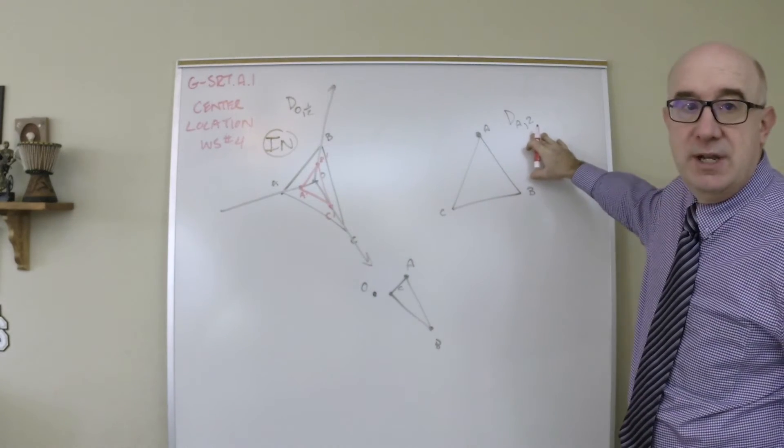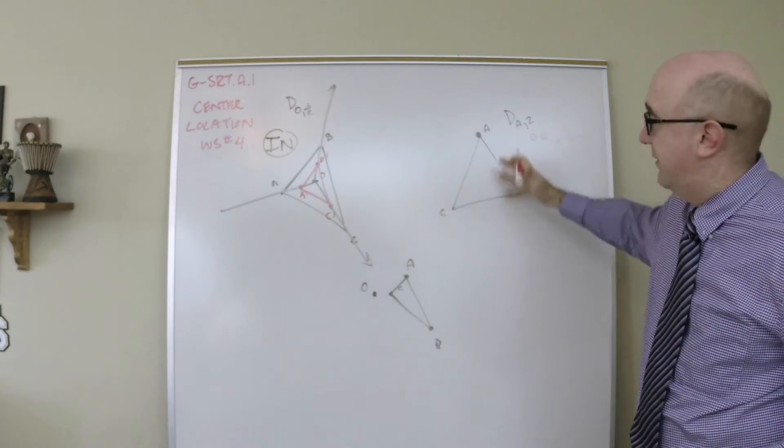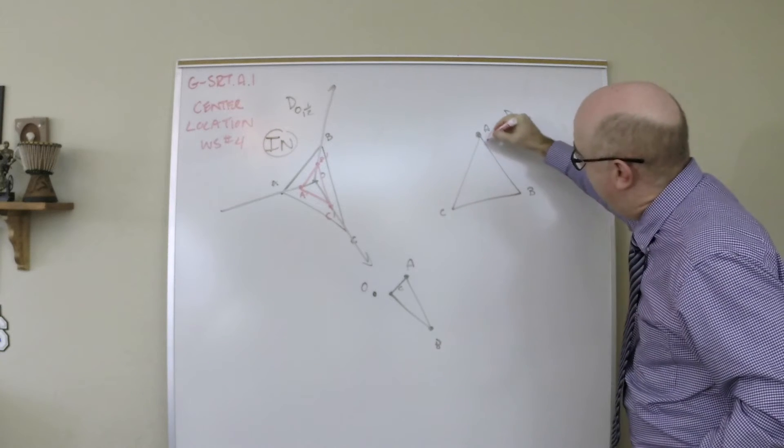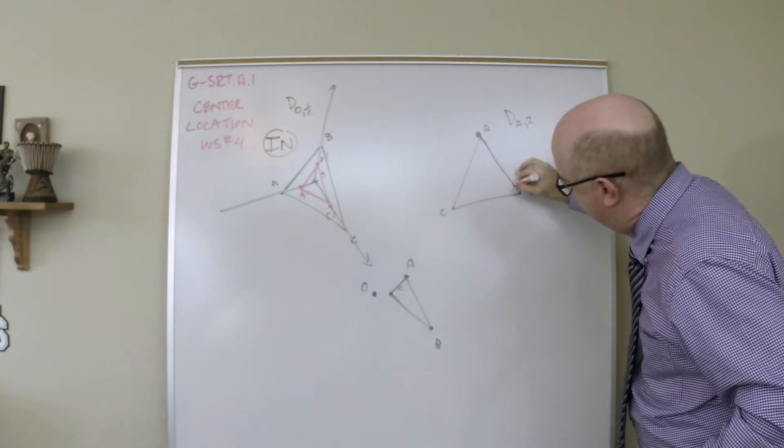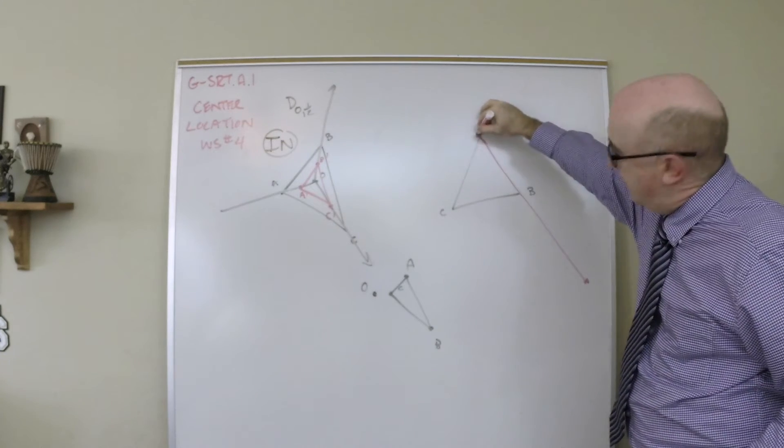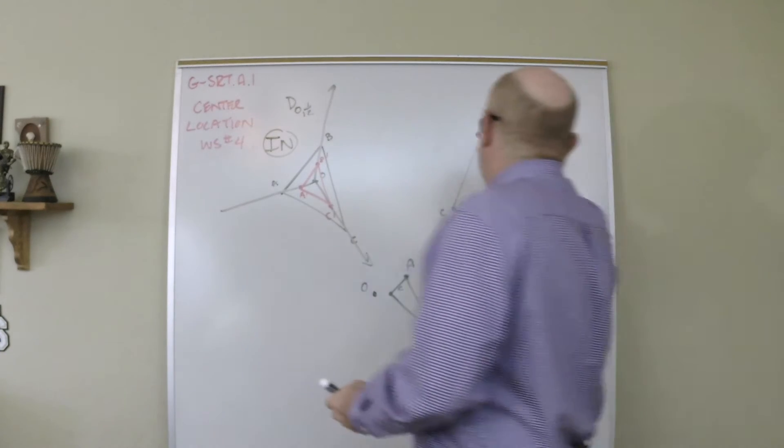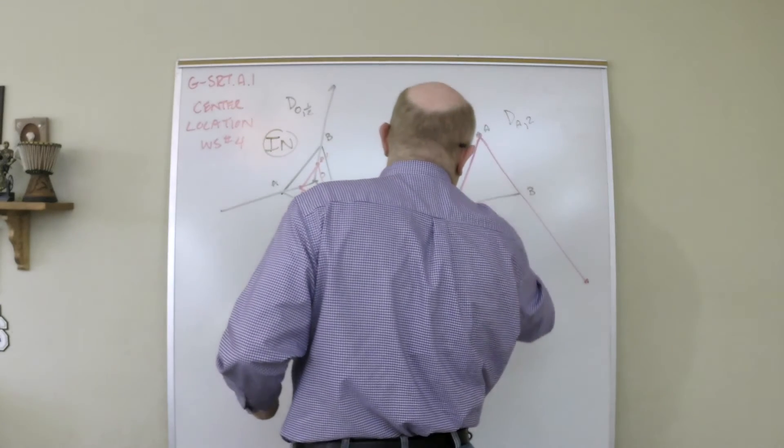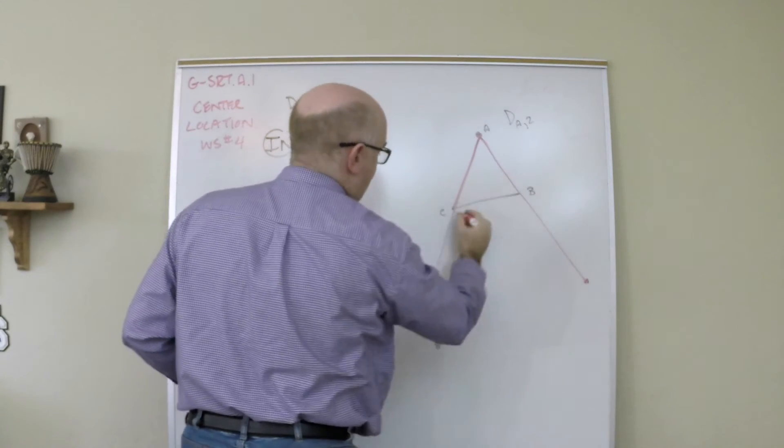You could also dilate using one of the vertices or even a point along the side. And what happens there, which is quite unique I think, is A of course is not going to move, it's the center in this case, so it will stay locked into place. And everybody else in this case gets doubled.